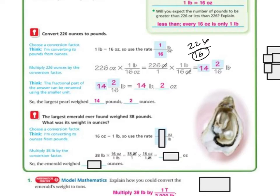The largest emerald ever found weighed 38 pounds. What was its weight in ounces? So 16 ounces minus the 1 pound, I'm going to use the rate of 16 over 1. Then I'm going to multiply that 38 by 16. 38 times 16.